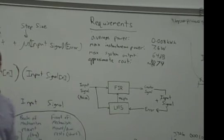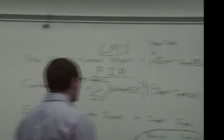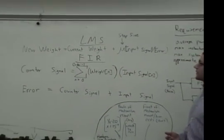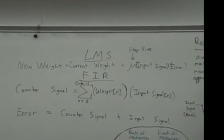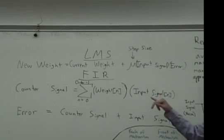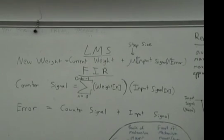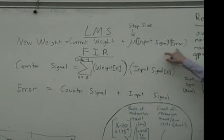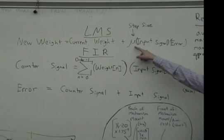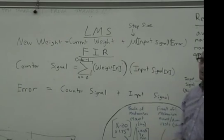To further explain that, I have these equations written out here. This first one is the LMS equation. How it calculates the new weights is it takes the current weights and it adds them to the input signal multiplied by the error, and there is also a step size here, which I will get to in a little bit.